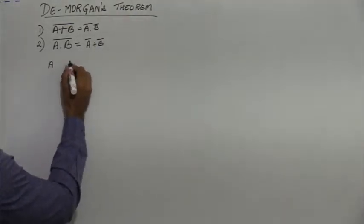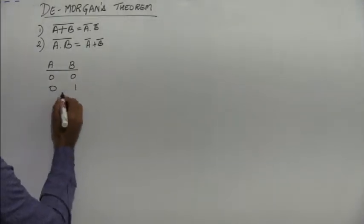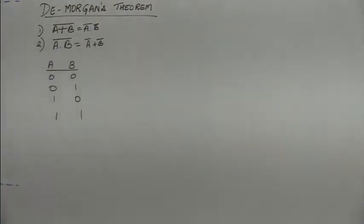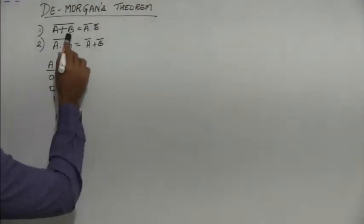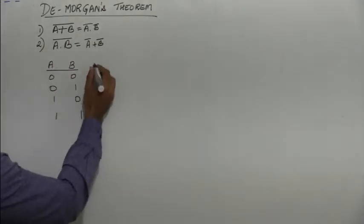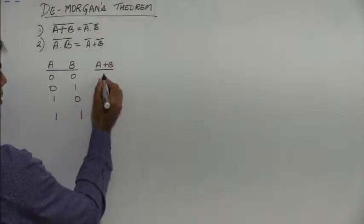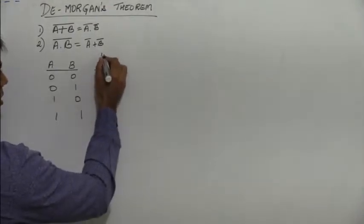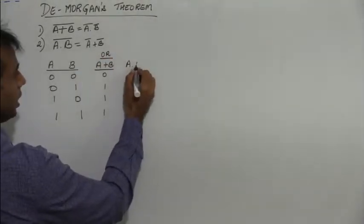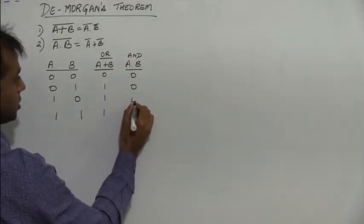For two variables A and B, we have four combinations: 0-0, 0-1, 1-0, and 1-1. I need A plus B, which is 0, 1, 1, 1 — this is nothing but the OR operation. I also need A dot B, which is the AND operation: 0, 0, 0, 1.